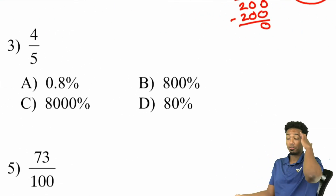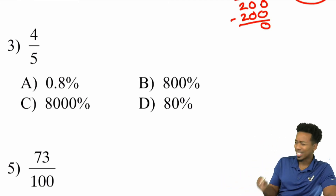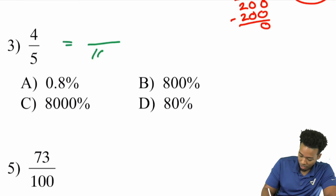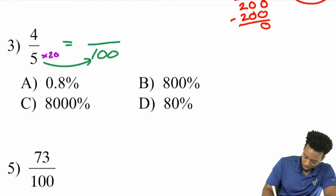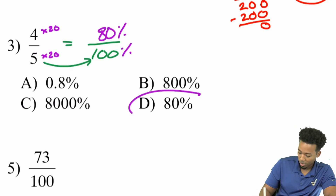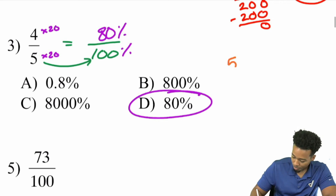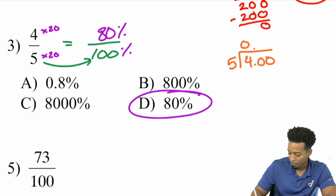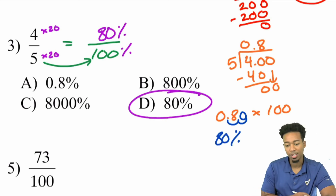Number three: can I get the denominator of 5 out of 100? Yes — 5 times 20 equals 100. Do the same to the numerator: 4 times 20 is 80. So 4/5 = 80/100 = 80%, which is choice D. The other way: divide 5 into 4 — 5 goes into 40 eight times, subtract 40, no remainder — giving 0.8. Multiply by 100 and move the decimal two places right: 80%. Both ways work.